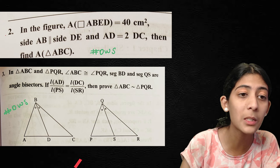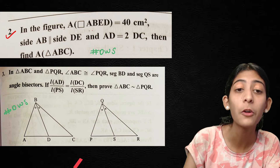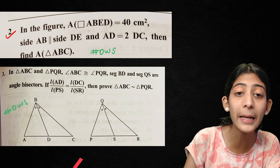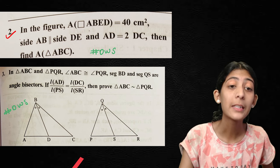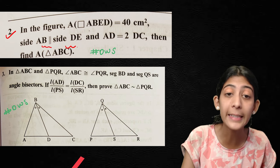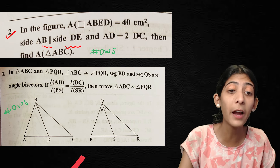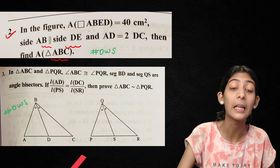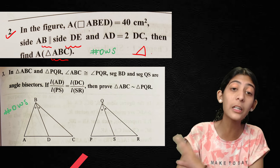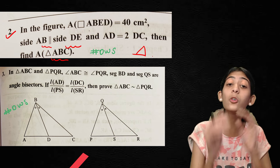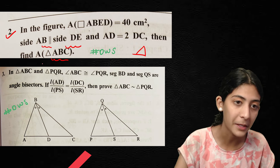Second question: In the figure, the area of parallelogram ABCD is equal to 40 cm². Side AB is parallel to side DE and AD is equal to 2DC. Find the area of triangle ABC. You can refer to the figure provided — in the figure you have to take the area of the triangle.